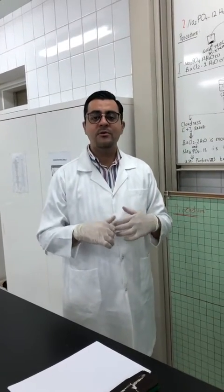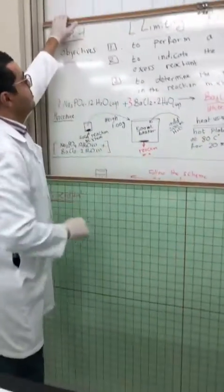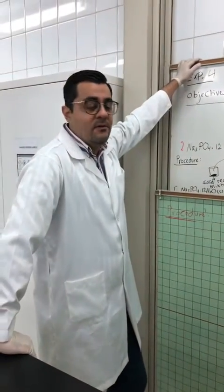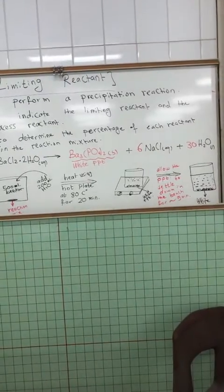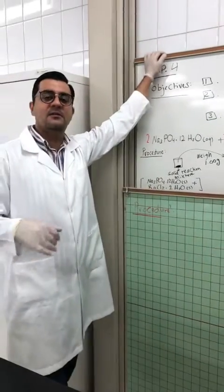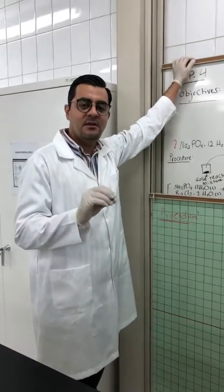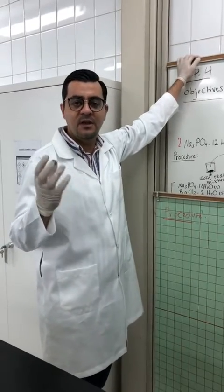What we will do today is to recognize this concept and illustrate it. Three objectives should be satisfied in our experiment today. The first objective is to perform a precipitation reaction. We can study the limiting reactant by applying different types of reactions, but today we selected one of these types, which is called the precipitation reaction.